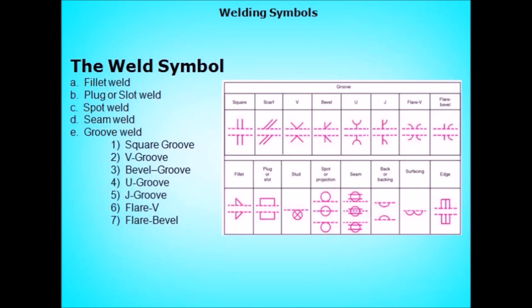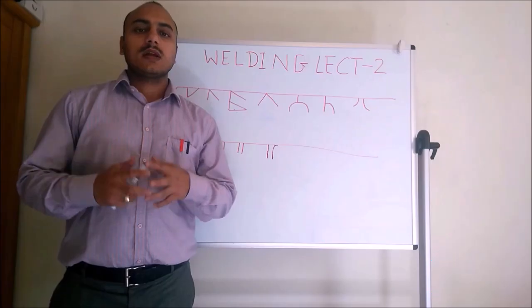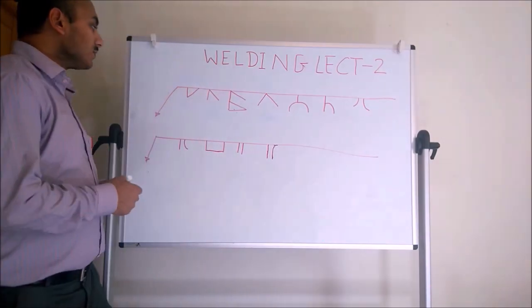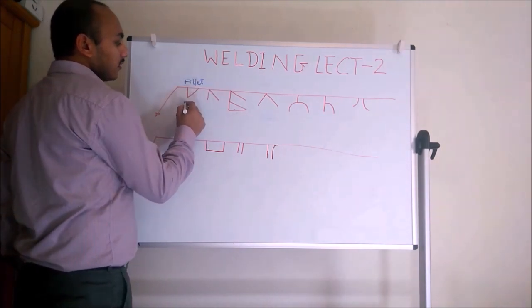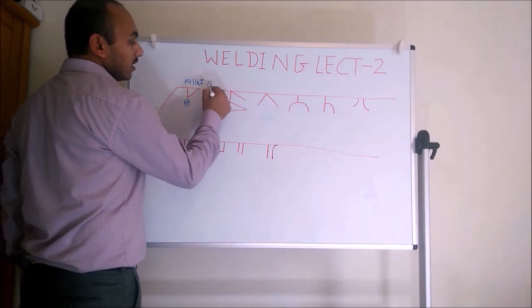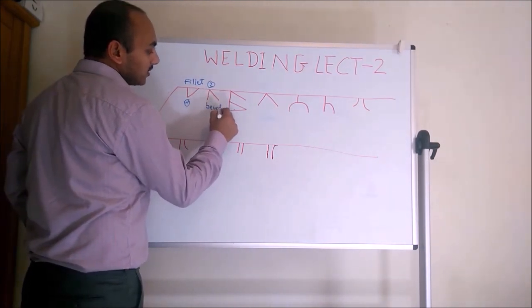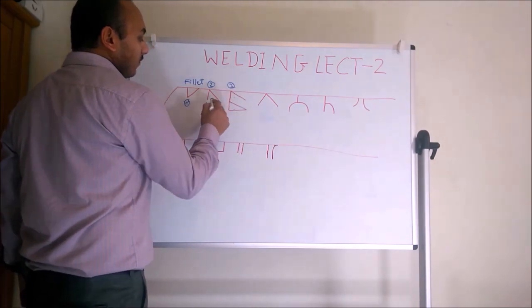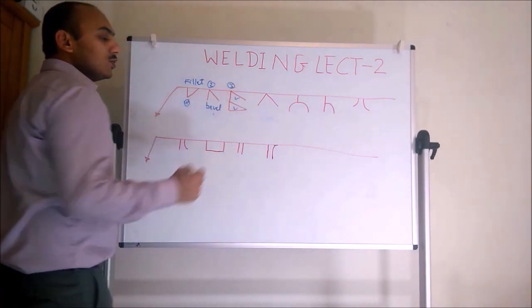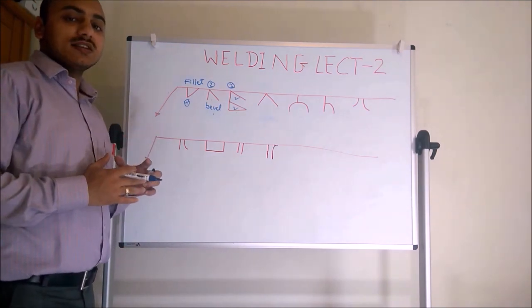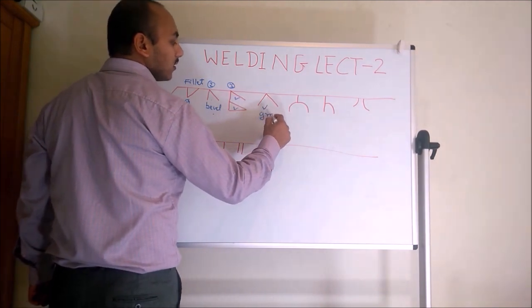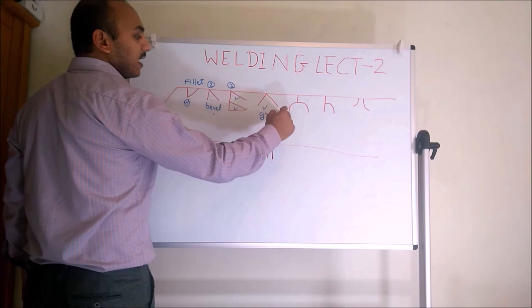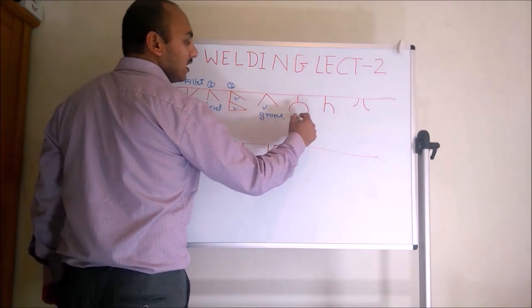We will discuss the most commonly used weld symbols. The first one is the fillet weld symbol. The second one is the bevel weld symbol. The third is a combination of bevel and fillet, which is used to provide greater strength to the weld. This is the V-groove weld symbol, easily identified by its shape. This is the U weld symbol.